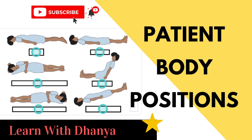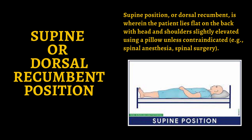Today's topic is patient body position. The first position is supine or dorsal recumbent position. Supine position means the patient is lying on a flat surface in an upright position. Supine position is otherwise called as dorsal recumbent position, where the patient lies flat on the back with the head and shoulders slightly elevated using a pillow unless contraindicated — mainly to give some anesthesia or for doing spinal surgery.